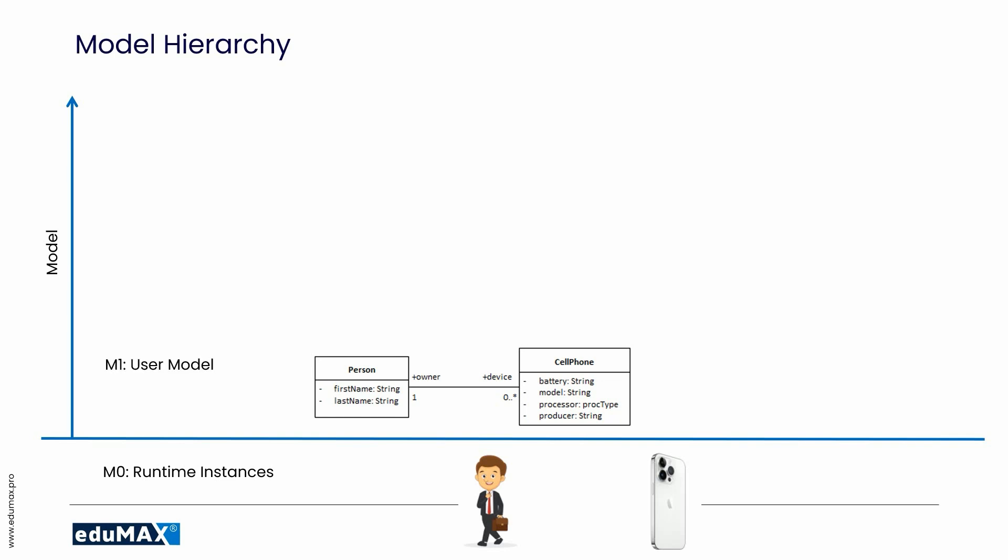We call it the M1 level, the user model. This is a diagram you can create in UML. And real objects are instances of these elements, as you can see here.